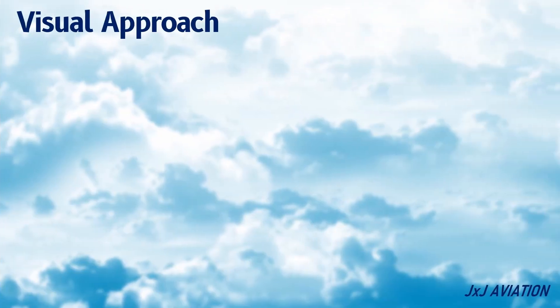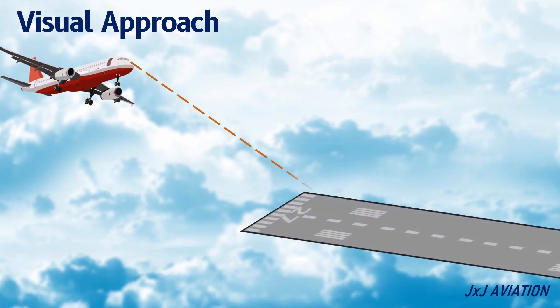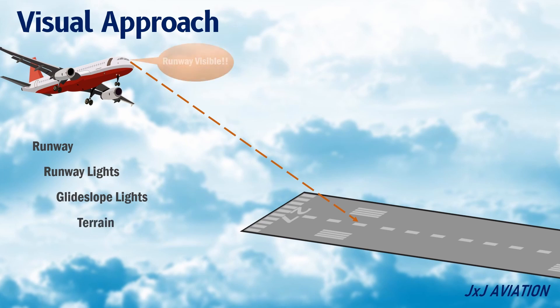What is a Visual Approach? A Visual Approach is an approach which is done using visual references. The references that can be used for approach guidance are: the runway, runway lights, glide slope indicator lights, or the terrain. This approach is only permitted if the weather conditions are good and there is good visibility.